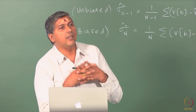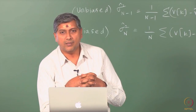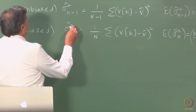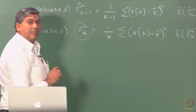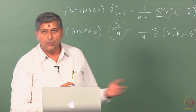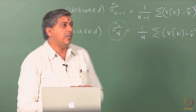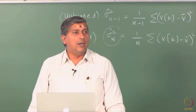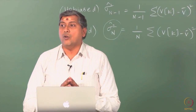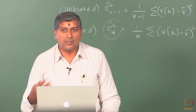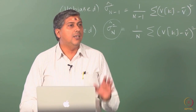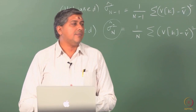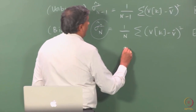So in any estimation exercise there is a tradeoff between bias and variance. For the variance estimator example, one normally prefers the unbiased form for large samples, and possibly the biased form for small samples. Another example we will encounter soon is the estimator of the autocovariance function. The sample autocovariance function has a factor of 1/n — let me write that expression.